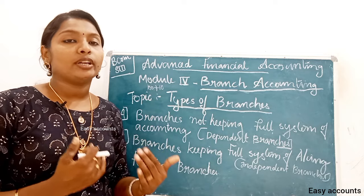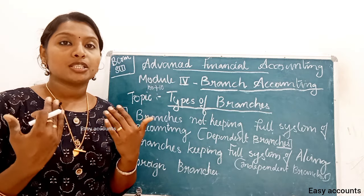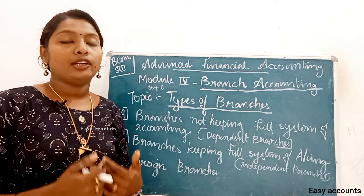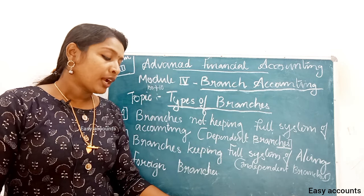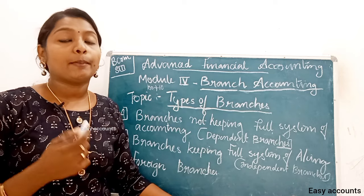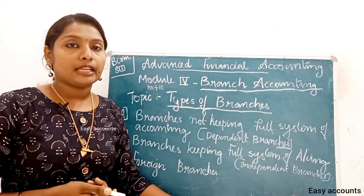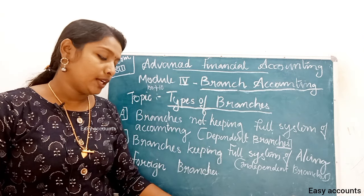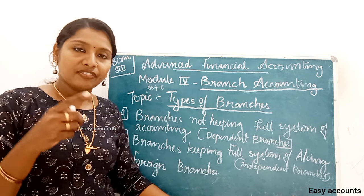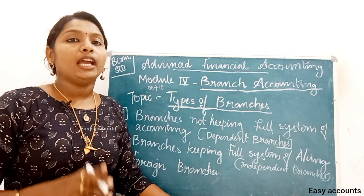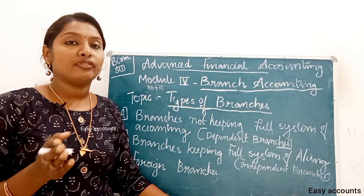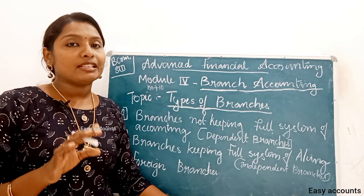For goods sent to the Head Office: debit Head Office Account, credit Goods Sent to Head Office Account. For cash or cheque sent to the Head Office: debit Head Office Account, credit Cash or Bank Account. For payment made by the branch on behalf of the Head Office: debit Head Office Account, credit Cash or Bank Account.